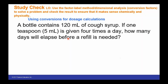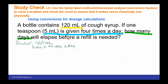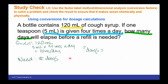A bottle contains 120 milliliters of cough syrup. One teaspoon, which is 5 milliliters, is given four times a day. How many days will elapse before a refill is needed? We're given 120 milliliters; our patient uses 5 milliliters four times a day, which is 20 milliliters per day. Starting with 120 milliliters times one day per 20 milliliters, the milliliters cancel and we end up with six days.